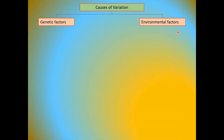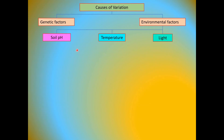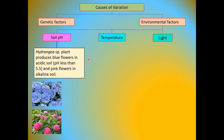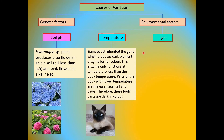Now we look at environmental factors. There are three factors: soil pH, temperature, and light. Hydrangea plants produce blue flowers in acidic soils and pink flowers in alkaline soils. For temperature, Siamese cats inherit genes which produce dark pigment enzymes for fur color. This enzyme only functions at temperatures lower than body temperature — parts of the body with lower temperature are the ear, face, tail, and paw. Therefore, these parts of the fur are dark in color.